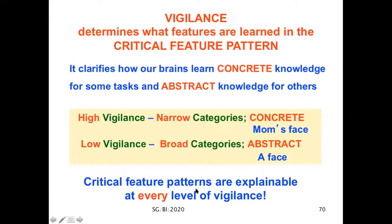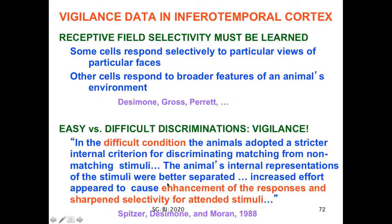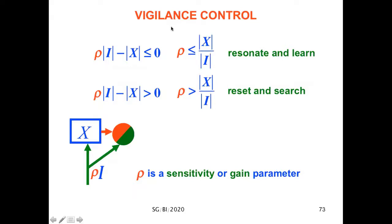It's important to realize that critical feature patterns are explainable at every level of vigilance. Here's an example of classifying the alphabet at two vigilance levels: a lower 0.5, a higher 0.8. Notice by the time you get to the letter T, there are more categories here and they're more concrete than they are here, where you only have four categories that are more abstract. Vigilance actually occurs in inferotemporal cortex. Desimone's lab was early to show it when they contrasted easy versus difficult discriminations, with difficult ones requiring higher vigilance, leading as expected to enhancement of the responses and sharpened selectivity for attended stimuli.